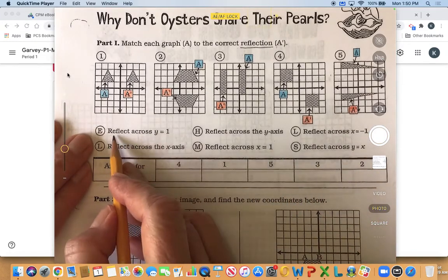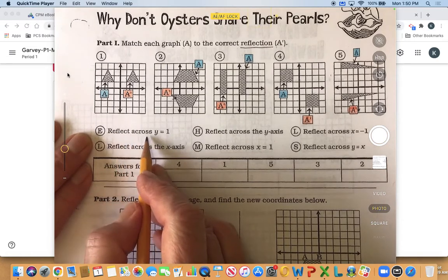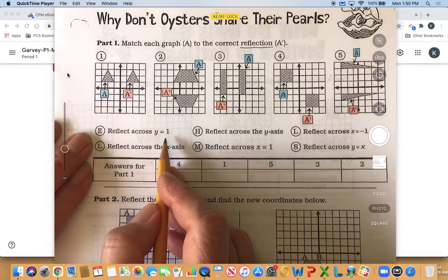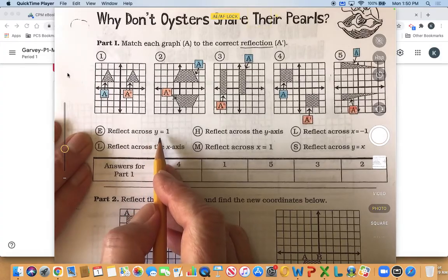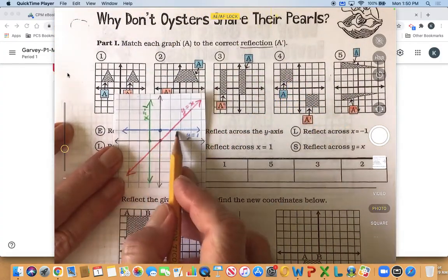So if we look at the answers it says something like reflect across y equals one. So that's a line y equals one and actually this is what that line looks like.